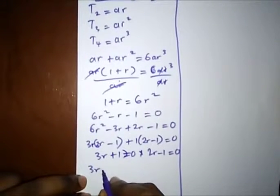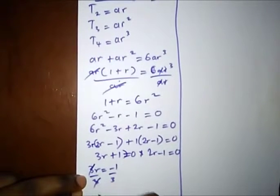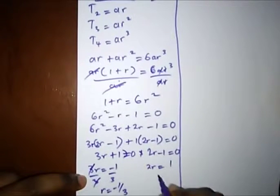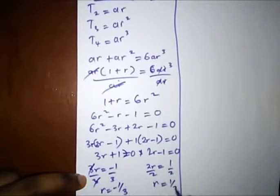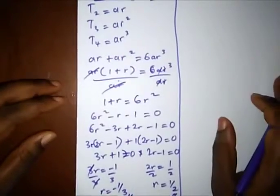This will give us 3R equal to minus 1, divided by 3, so R here is minus 1 over 3. Here we have 2R equal to 1, divided by 2, and we have R is equal to 1 over 2. So these are our two possible values of R as the common ratio.